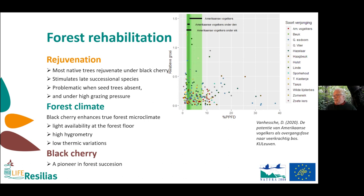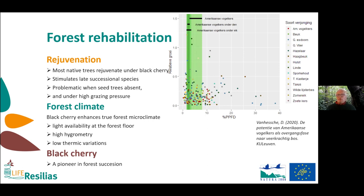Forest climate is also very important — it's becoming more important with climate change to have a cooler forest with higher humidity. Black Cherry can play a very important role here, because if there is a gap, it very quickly fills it and restores the forest climate. So we are now looking at Black Cherry as a pioneer in forest succession. But as we all know as forest ecologists, a pioneer will always lose, and the late successional species will take over.